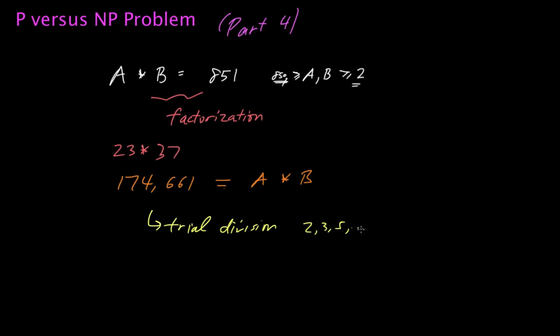If you were able to find one non-trivial divisor, you would in turn find another non-trivial divisor. That would give you a mechanism for decomposing 174,661 into two factors.